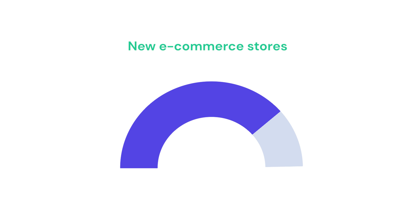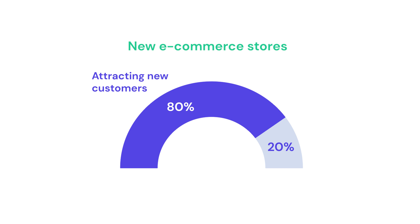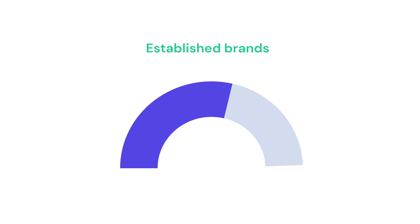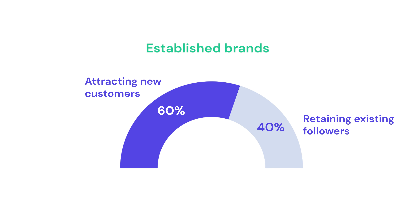For new e-commerce stores, it's recommended to follow the 80-20 rule: 80% of your content is for attracting new people and 20% is for retaining and nurturing existing followers. If you're already an established brand, that ratio can change to about 60% reach and 40% nurture.